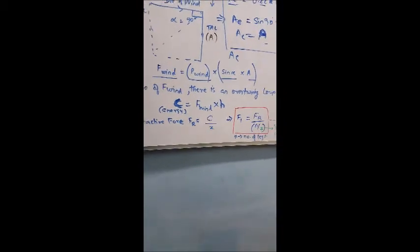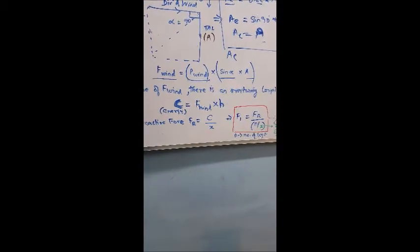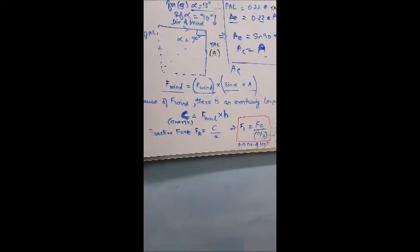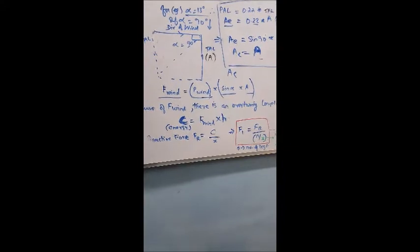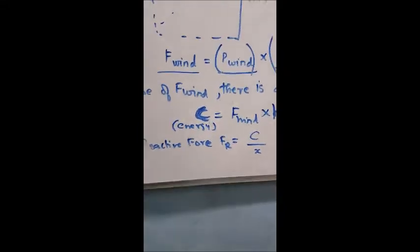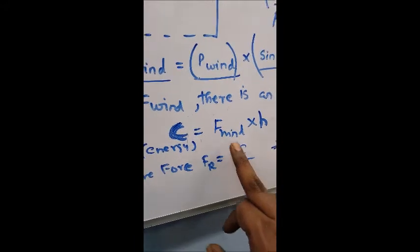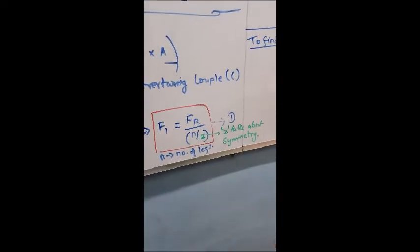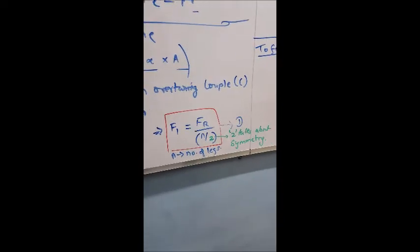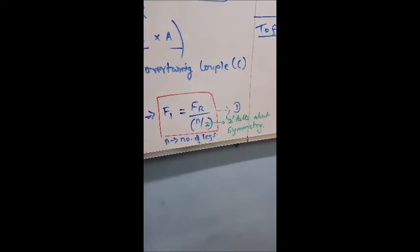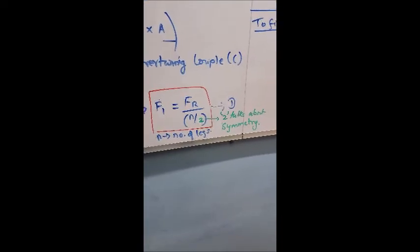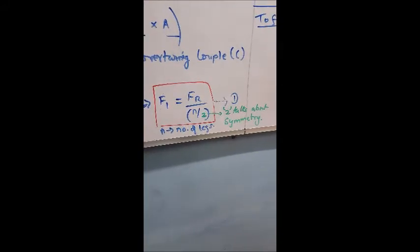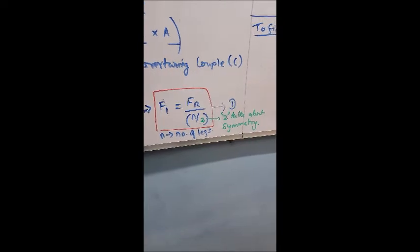The overturning couple is the force of the wind times h, where h is the distance from the topmost edge B' to the center of gravity of the structure. Because of this turning couple, every action has a reaction, so there is a reactive force Fr. That reactive force is defined as C divided by x, which equals force of wind times h divided by x. For any one particular leg, the force is Fr divided by n/2 due to the symmetry maintained.